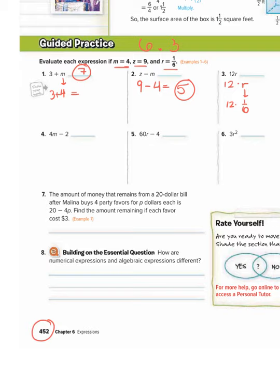So that's 12 over 1 times 1 over 6. So 12 times 1 is 12. 1 times 6 is 6. And then 12 divided by 6 is 2.